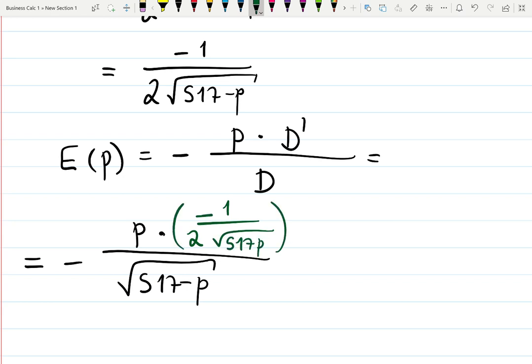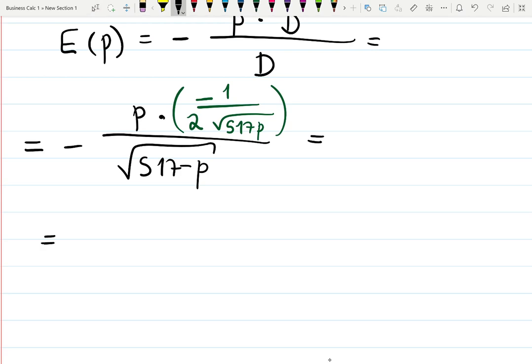Now I need to simplify this. It looks scary at first, but this is how I usually explain it: I want to create one single fraction out of those two fractions. Whatever is in the denominator should stay in the denominator, so I will keep this √(517 - p) in the denominator.